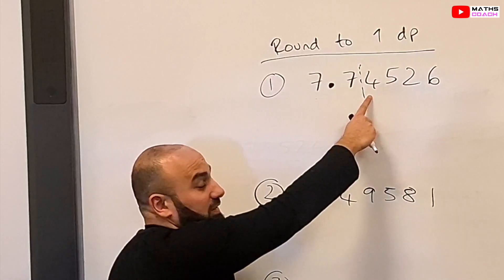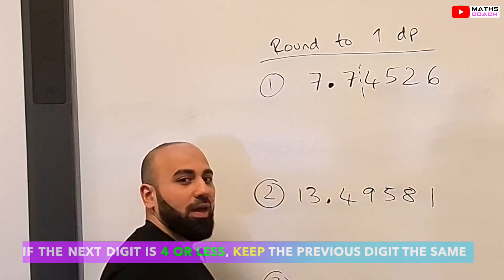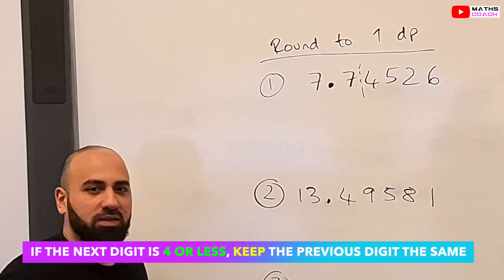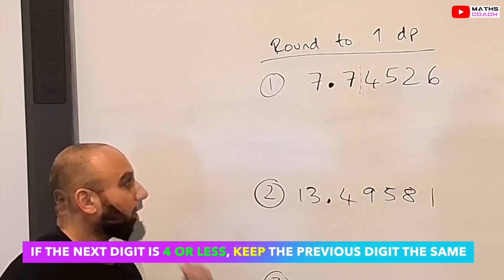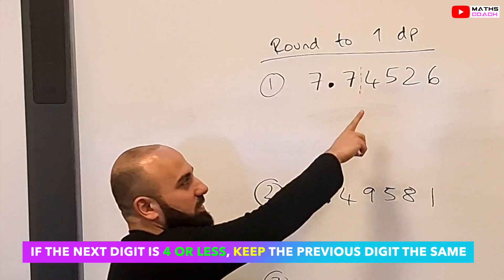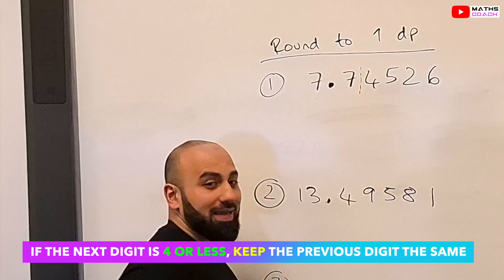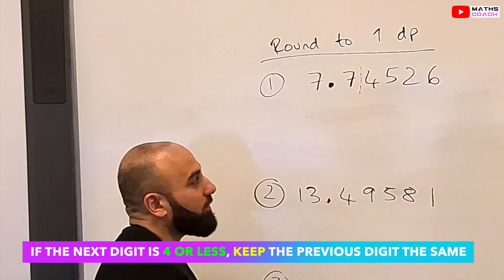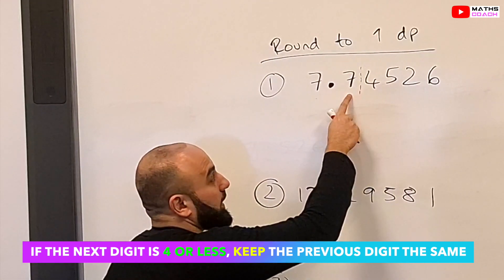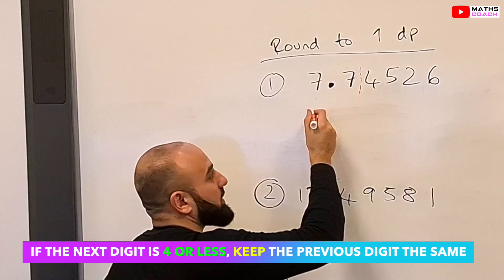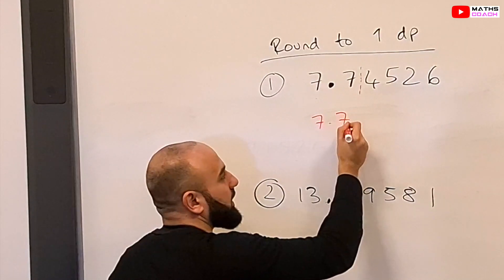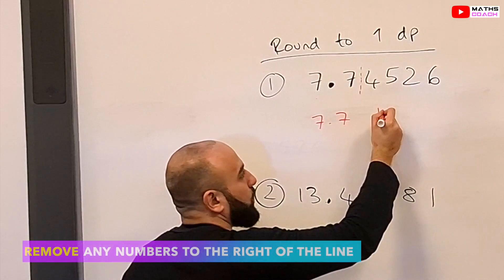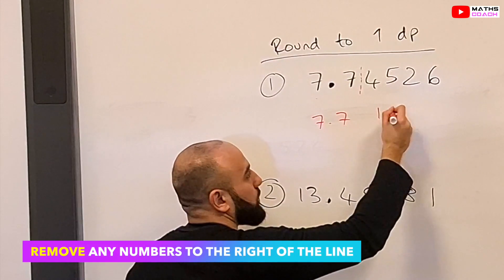But if it's less than 5, then we'll keep it the same — we'll keep it 7.7. So since this number is less than 5, then this number, 7, will stay the same. So your answer will be 7.7 to one decimal place.